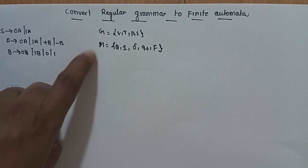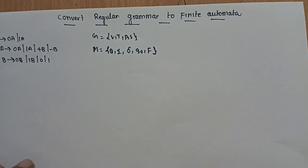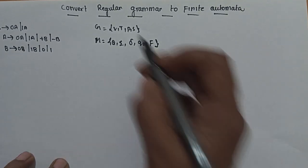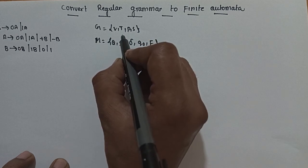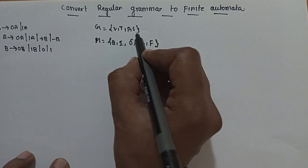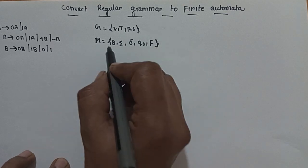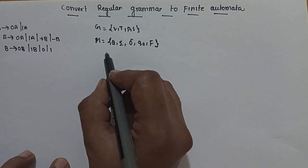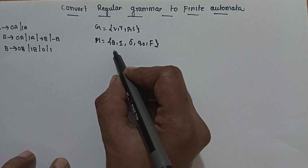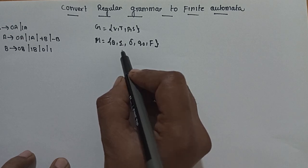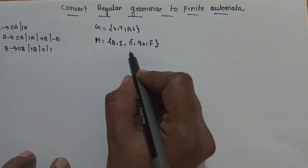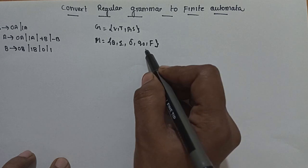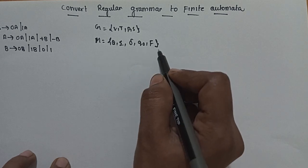Regular grammar has four-tuple; finite state automata has five-tuple. In regular grammar: V is the set of non-terminals or variables, T means set of terminals, P means set of production rules, S means start symbol. For finite state machine: Q is the set of states, sigma is the input alphabets, delta is the transition function, Q0 is the initial state, F is the final state.